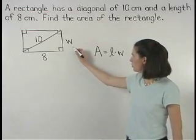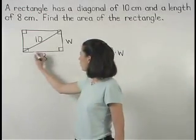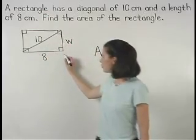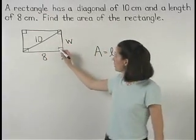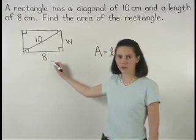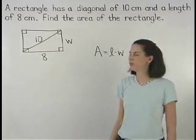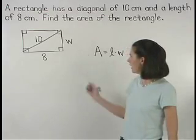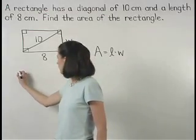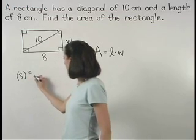To find the value of w, notice that a right triangle is formed in the lower right of the figure. And since we know the lengths of two sides of the right triangle, we can use the Pythagorean theorem to find the length of the third side. So we have 8 squared plus